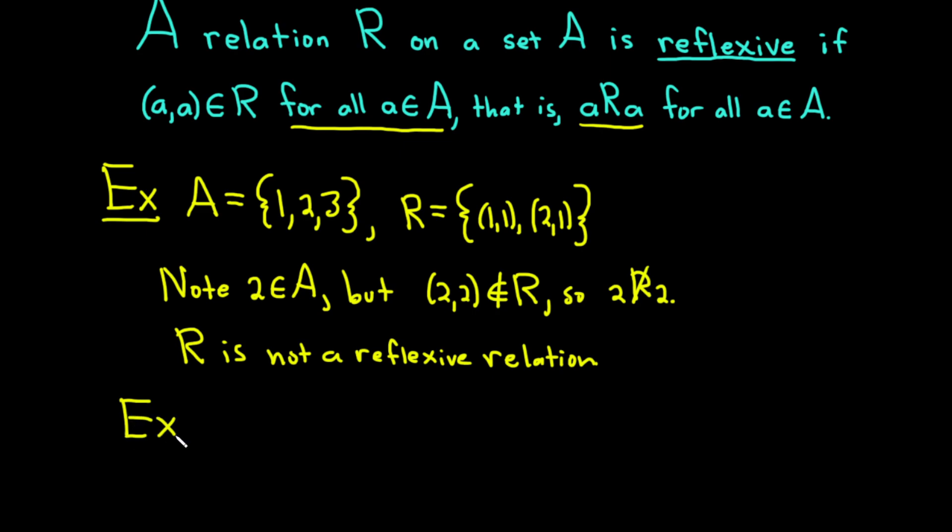1, 2, 3, 4. And then we're going to let R here be the set containing (1,1), (2,2), (3,3), (4,4), and (1,3).